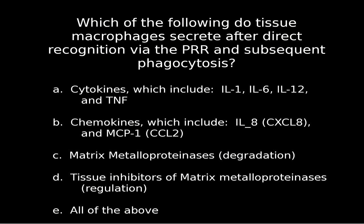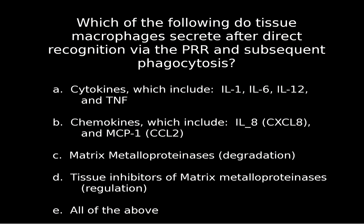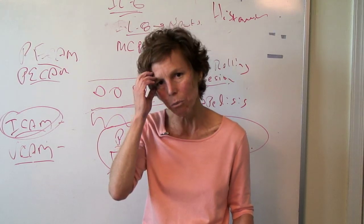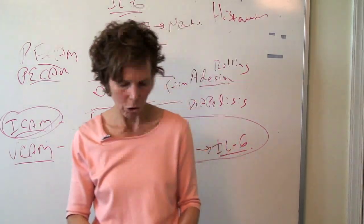Number eight: which of the following do tissue macrophages secrete after direct recognition via pathogen recognition receptors and subsequent phagocytosis? Remember, those would be your TLRs or NOD-like receptors. The answer is all of the above: you're going to get IL-1, IL-6, IL-12, and TNF, as well as the chemotactics IL-8 and MCP-1, the matrix metalloproteases — which are going to chew up that type 4 collagen in the basement membrane — and tissue inhibitors of those, which are the regulatory component. You will be asked questions on number eight all the time, because they want you to understand the mechanism by which macrophages are attached to the inflammatory process.